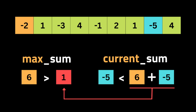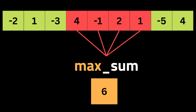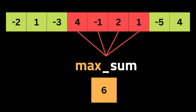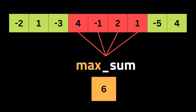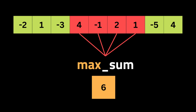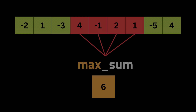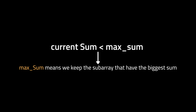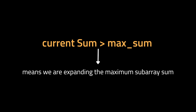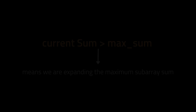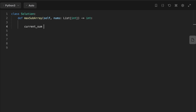Then we update the maximum sum to be the max between the previous max_sum and the current_sum. This ensures that max_sum holds the maximum of any subarray found so far. Finally, we return max_sum. Each time current_sum is less than max_sum, we keep that previous max_sum. Each time current_sum is bigger than max_sum, it means we are expanding the maximum subarray sum.